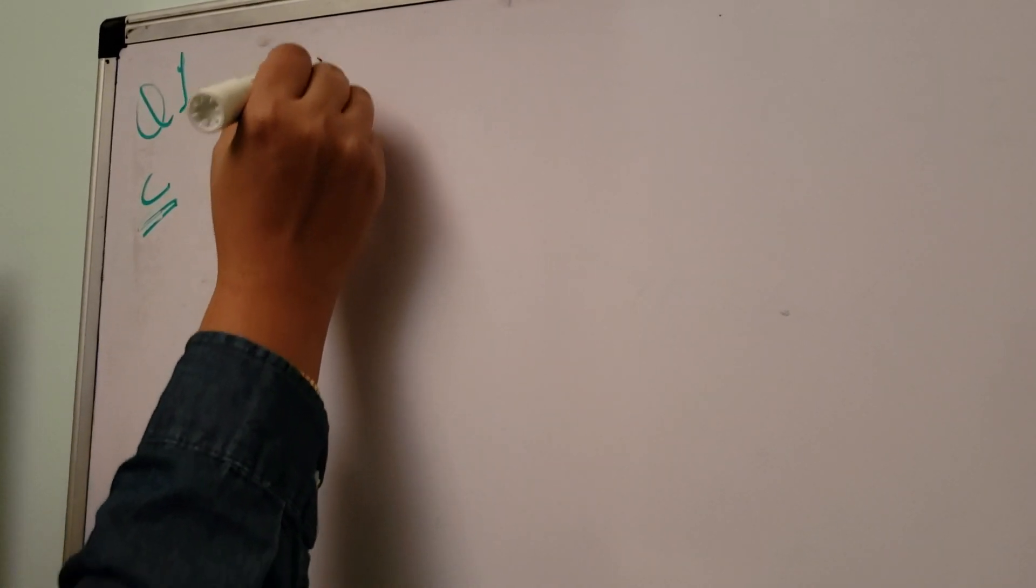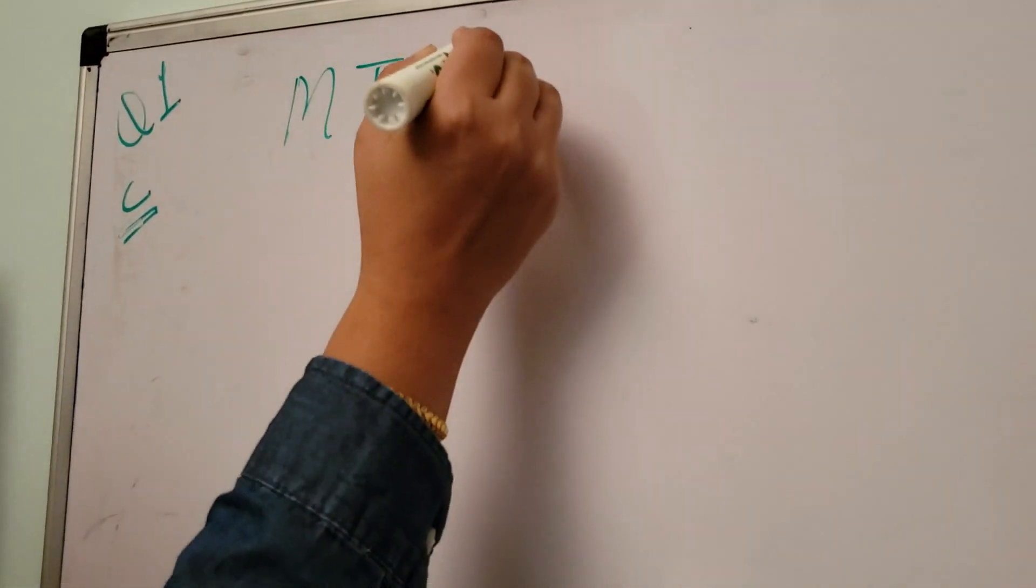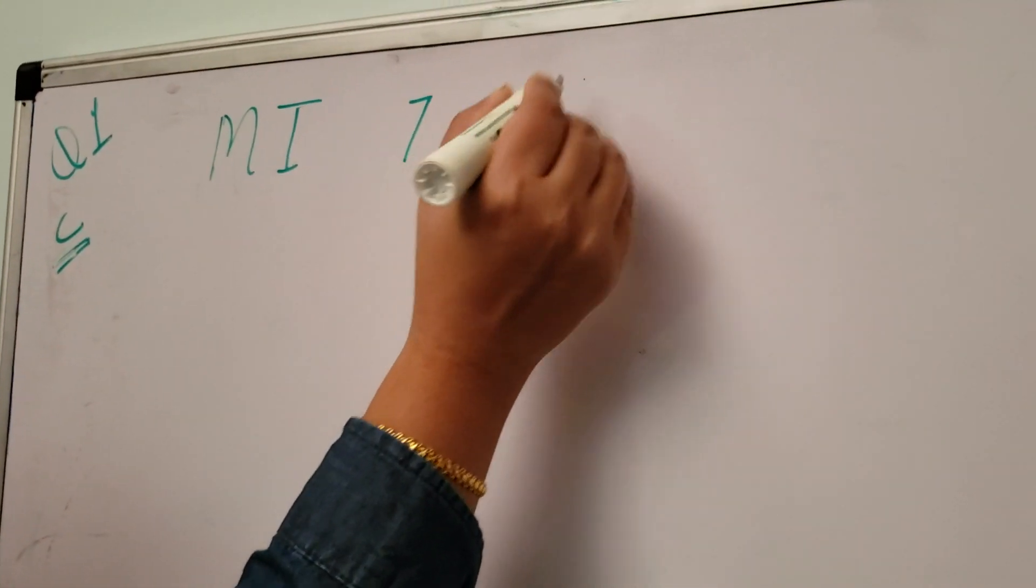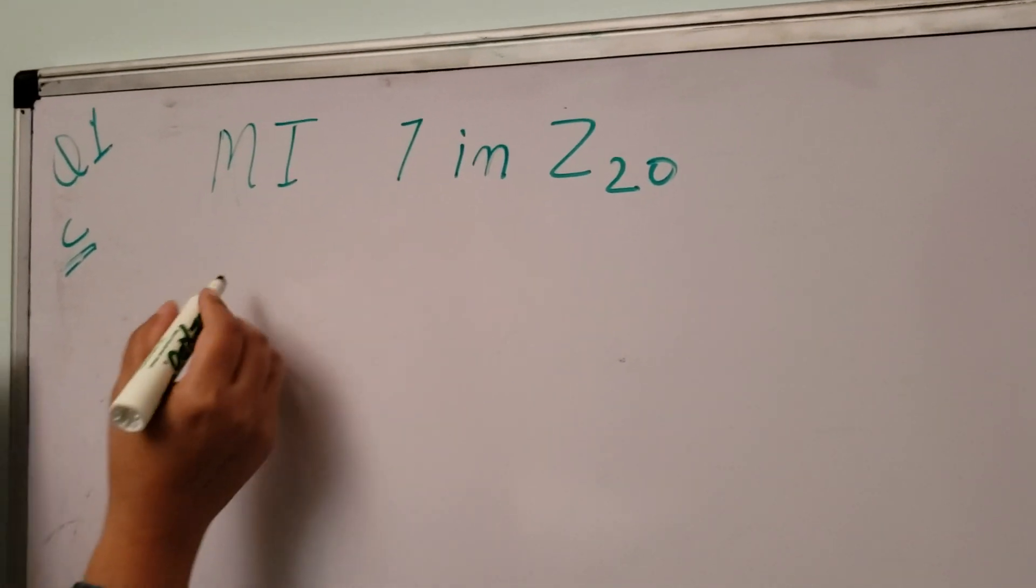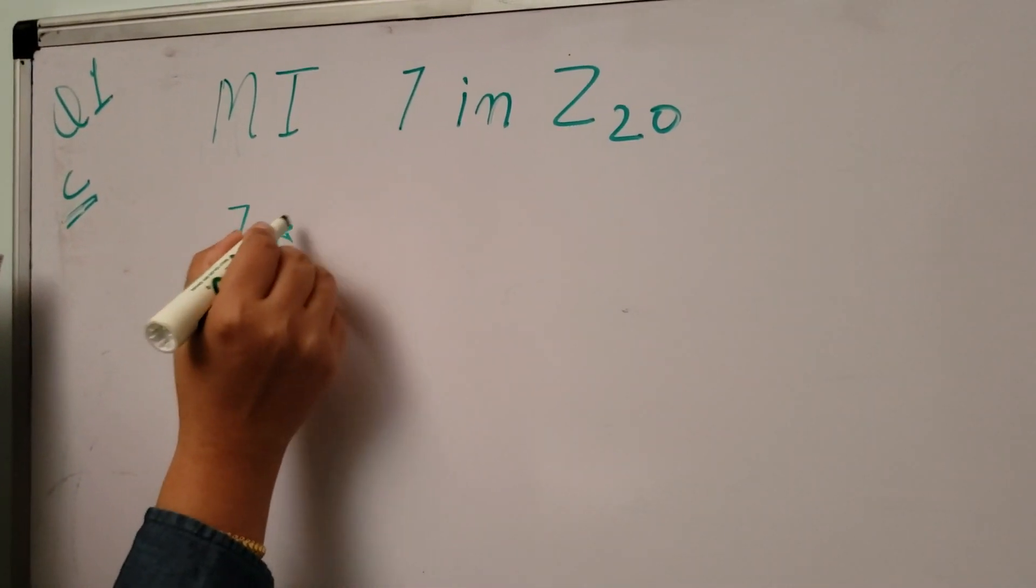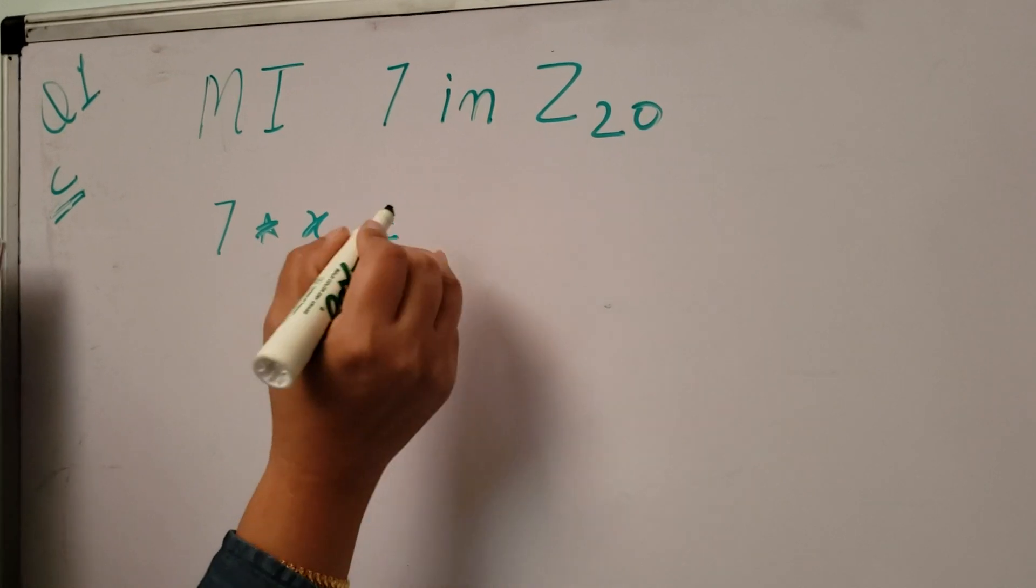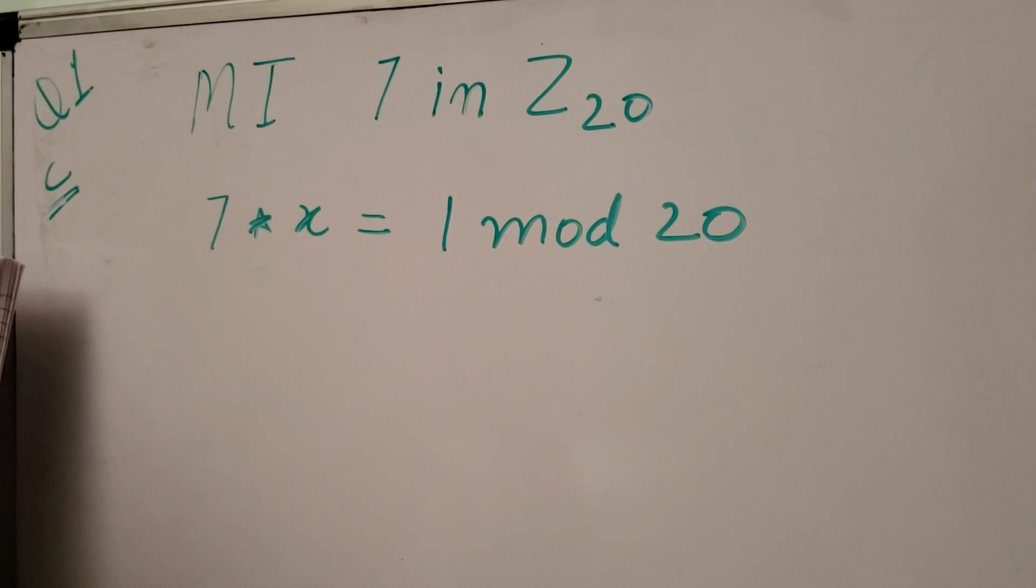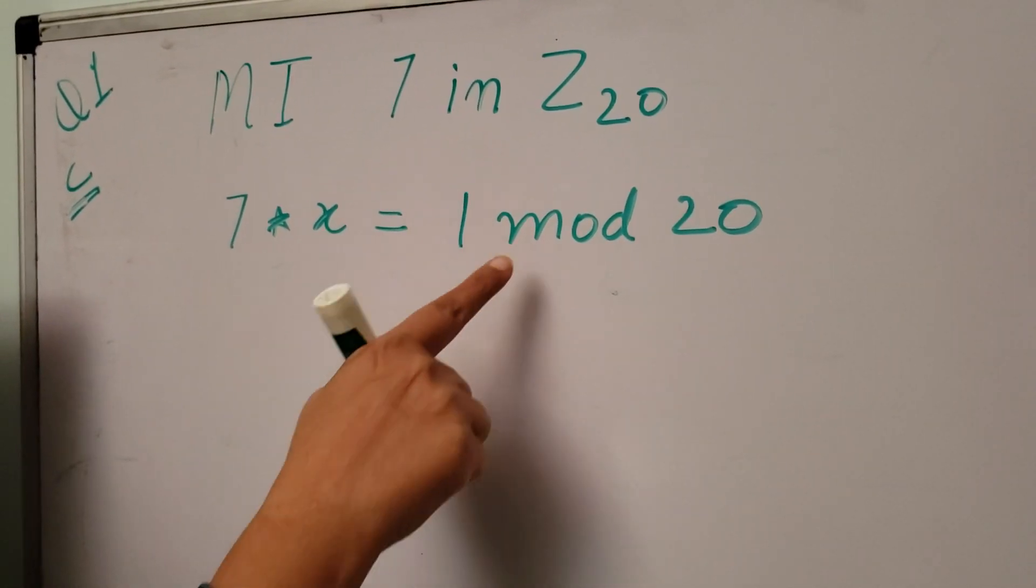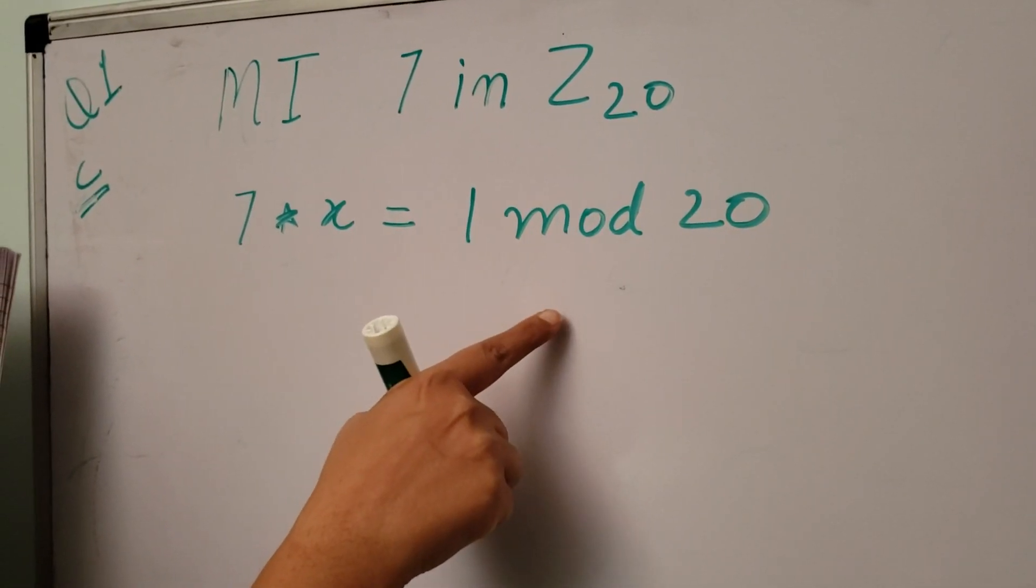Question number one part C: find multiplicative inverse of 7 in Z20. I will call it MI 7 in Z20. According to the formula, 7 times x is equal to 1 mod 20. We know that 1 mod 20 is 1, so on the right hand side we are looking for 1.